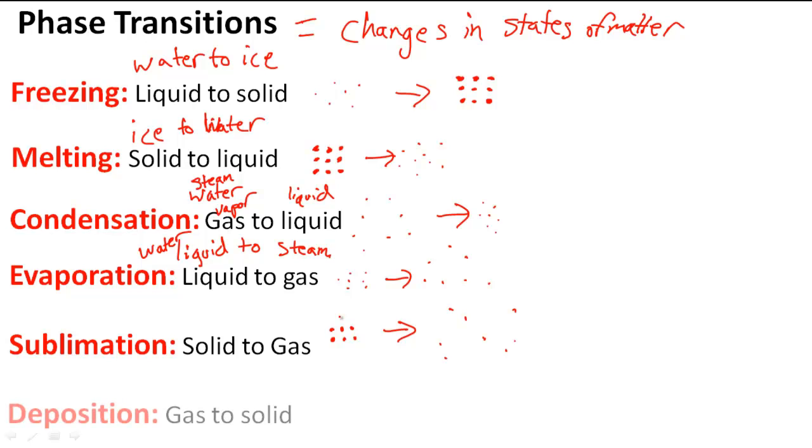Lastly, deposition. This is going from gas to solid. As you can imagine, very spread apart particles go into a very rigid state, and that means it becomes a solid.